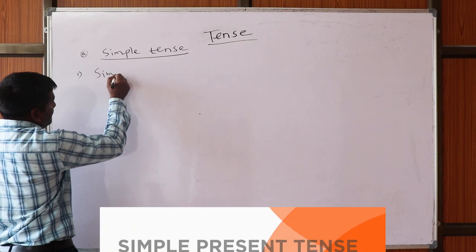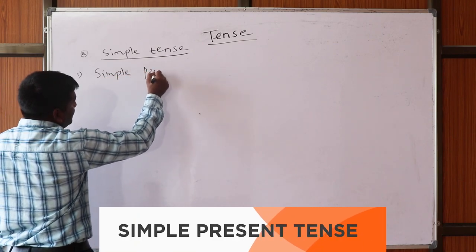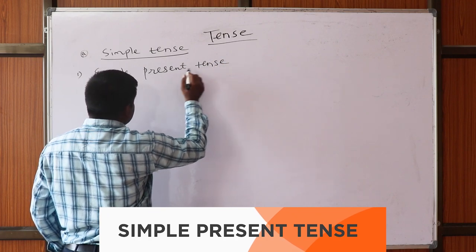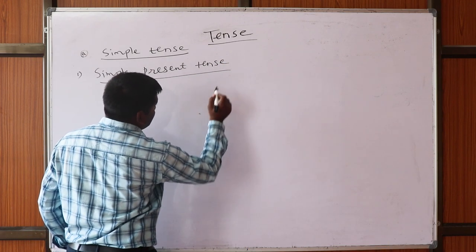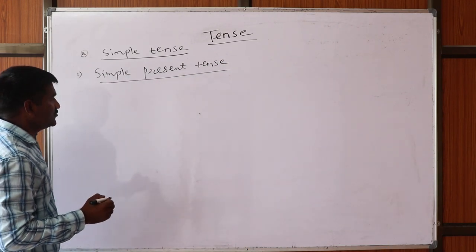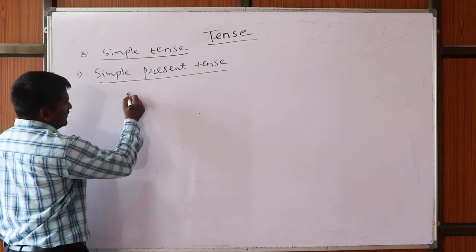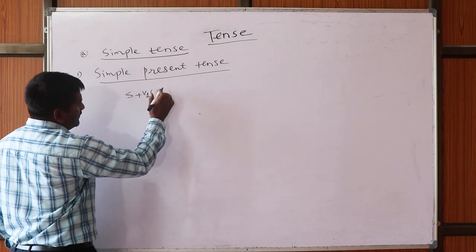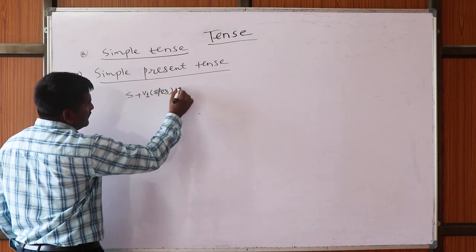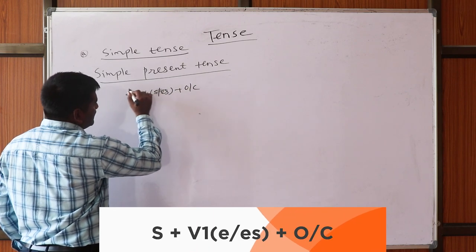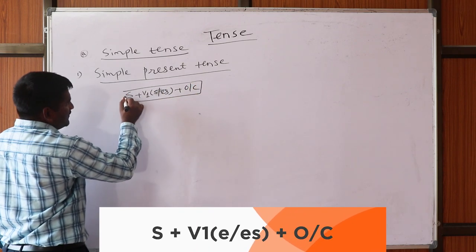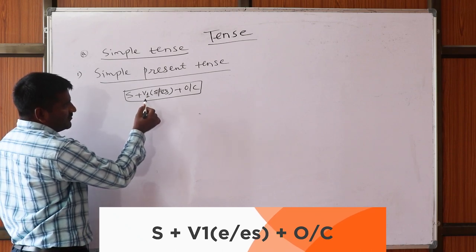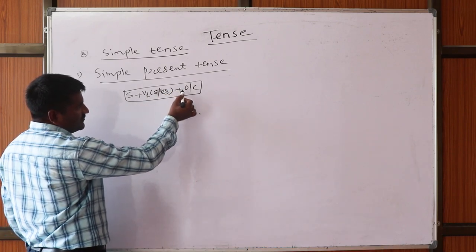We will understand the first tense: simple present tense. It is a very important tense. Its formula is S + V1 (S/ES) + O + C, where S is subject, V means verb or work, O is object, and C is complement.